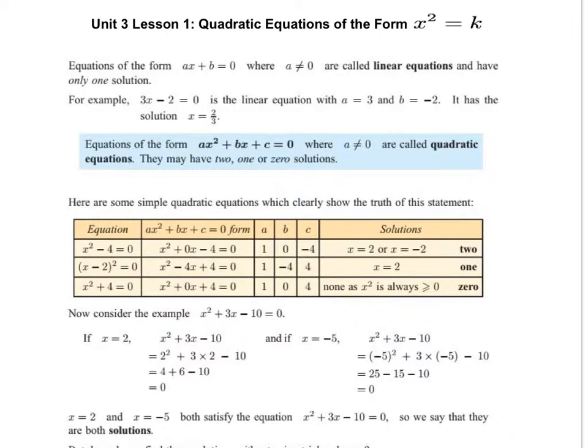What we've normally studied before are linear equations. So a linear is where the highest power of x is 1. So you see 3x minus 2 equals 0 is a linear equation. Or imagine you had something like 2x plus 4 equals 0, that's another linear equation. So you would solve that and you would end up getting that x equals minus 2.